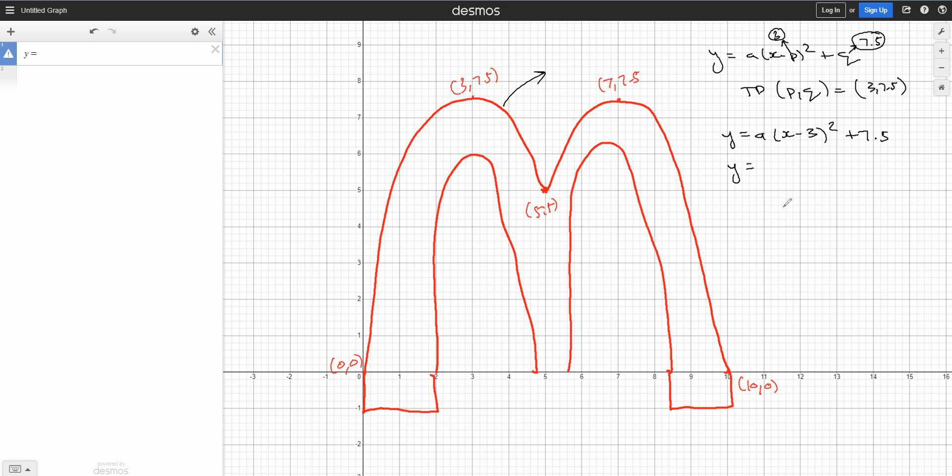To find the a value, I've got to give a point and substitute it in. So if I substitute the point 0, 0, I can get a. And so 0 equals a 0 minus 3 squared plus 7.5. That'll become 9, and it'll be negative 7.5 divided by positive 9. Which will be some value. I can write this as 15 over 18, negative 15 over 18, and then divide it by 3 to become negative 5 over 6.